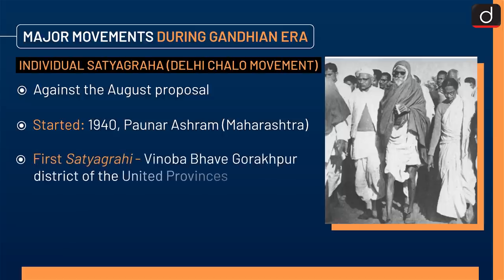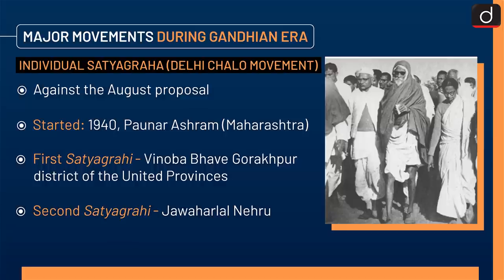The Individual Satyagraha was started against the August Proposal. It started in 1940 in Pavnar Ashram, Maharashtra. The first Satyagrahi was Vinoba Bhave and the second Satyagrahi was Jawaharlal Nehru.